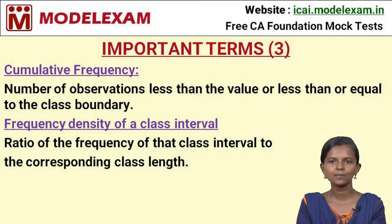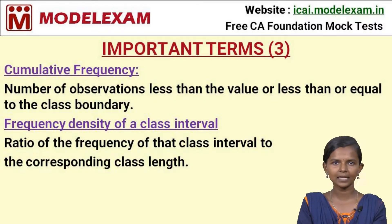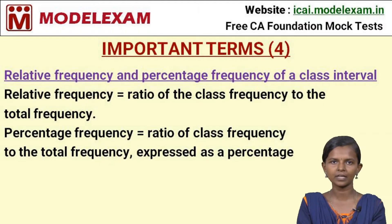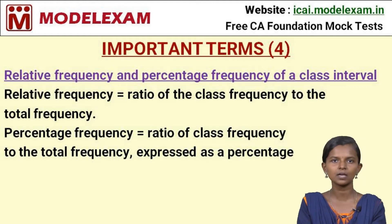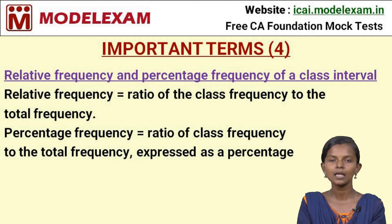Further important terms: Frequency density of a class interval is the ratio of the frequency of that class interval to its corresponding class length. Relative frequency is the ratio of the class frequency to the total frequency. Percentage frequency is also the ratio of class frequency to total frequency, but expressed as a percentage — that is, relative frequency multiplied by 100. Thank you.